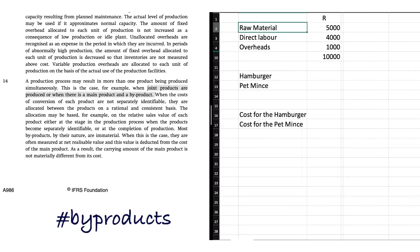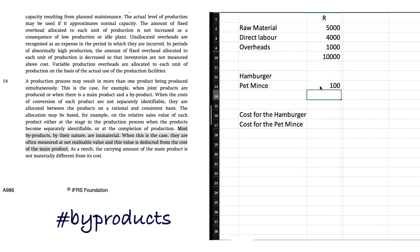What IFRS encourages you to do is simply use the net realizable value. Looking at paragraph 14: byproducts by their nature are immaterial — when this is the case, they are often measured at net realizable value, and that value is just deducted from the cost of the main product. So at the end of today, the pet mince — I've made enough to perhaps get 100 rand from selling it. Measure the pet mince at its net realizable value of 100 rand, and allocate all the other costs to your main product, the hamburger patties. It's as simple as that.